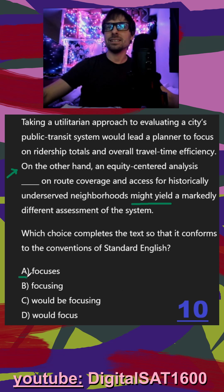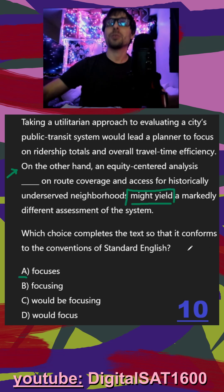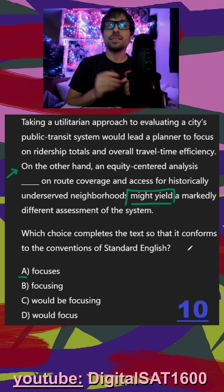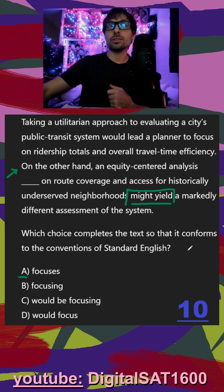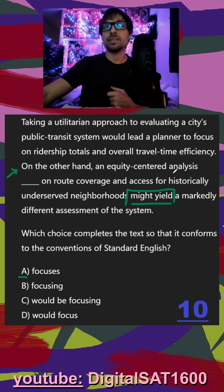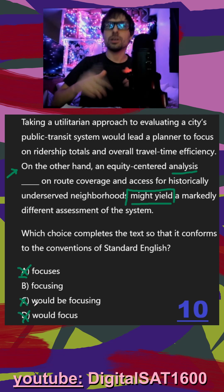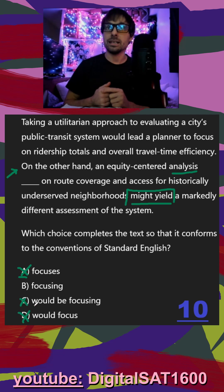We try A maybe because it's the easiest verb to use, but as soon as I see this other verb that takes over — remember this type of problem — since I don't have a choice for 'yield,' that kind of takes over our subject, the equity-centered analysis. We need to get rid of our other active verbs that would be trying to compete with 'might yield.'